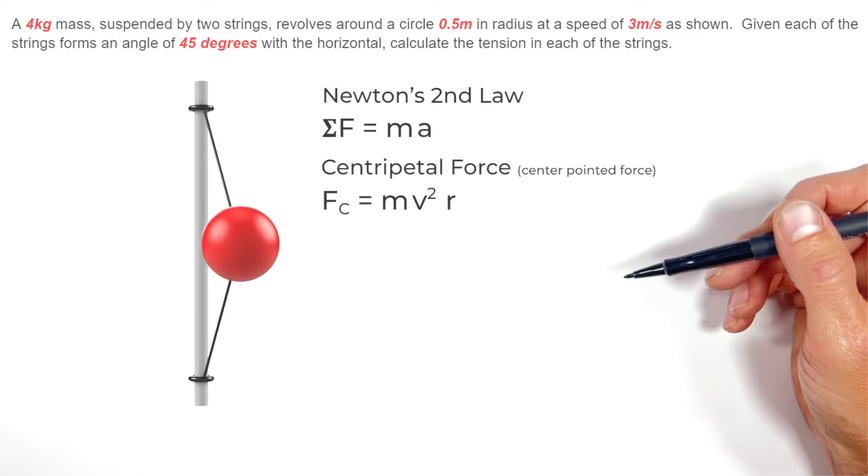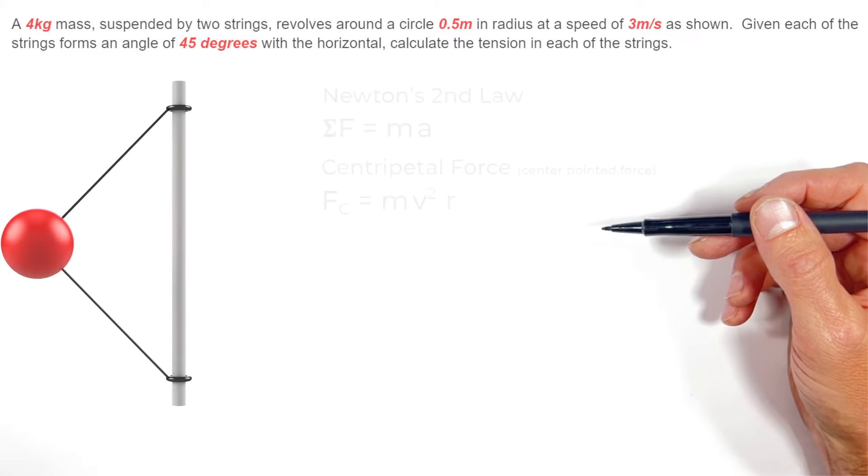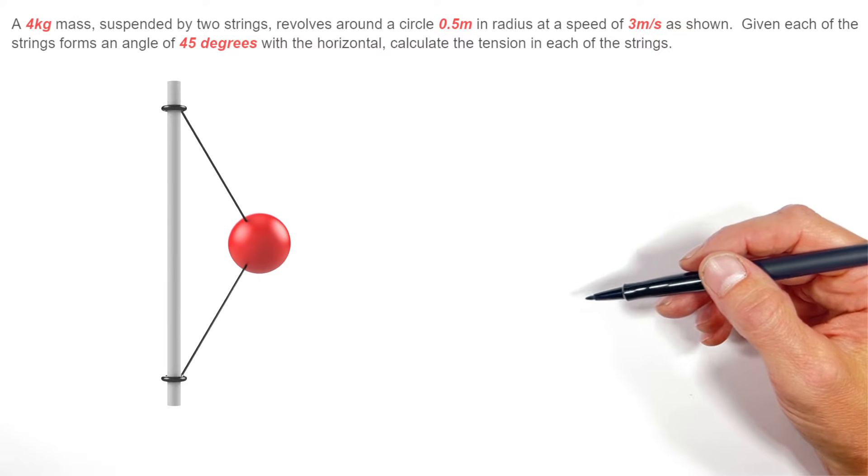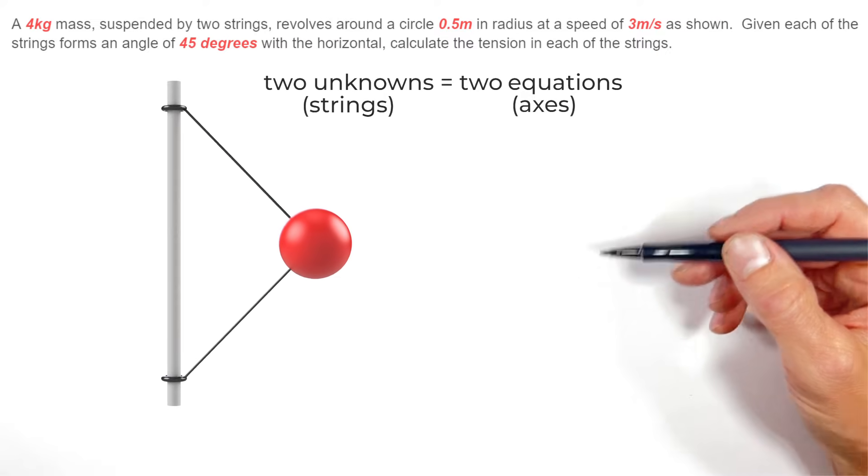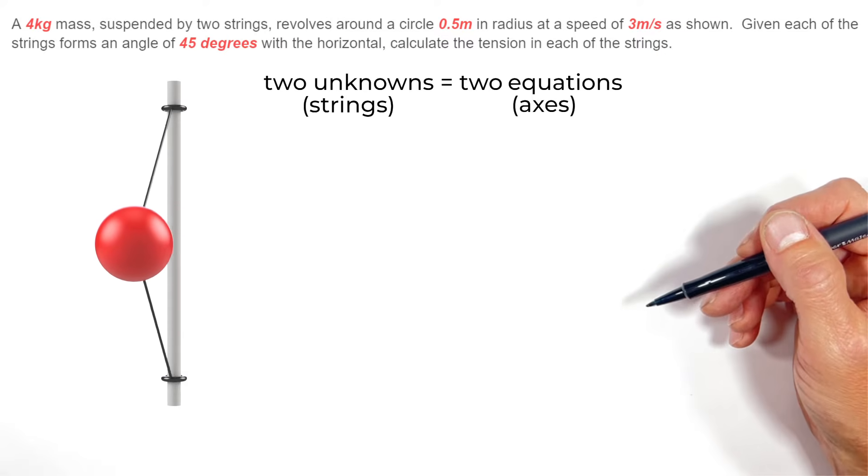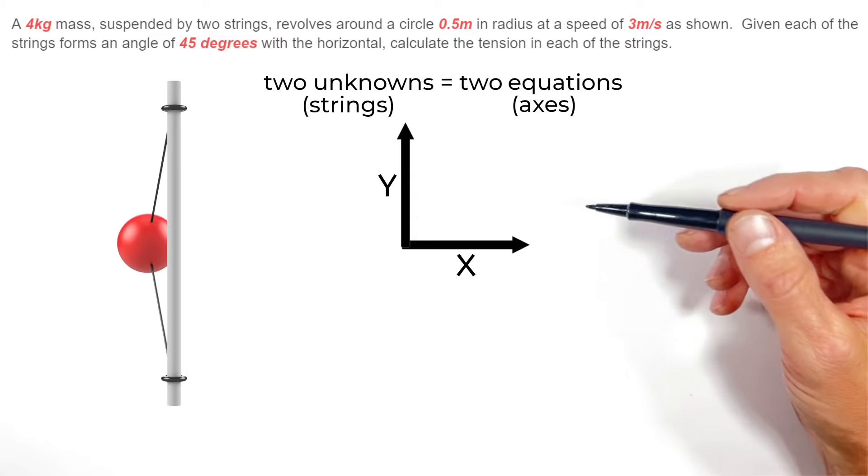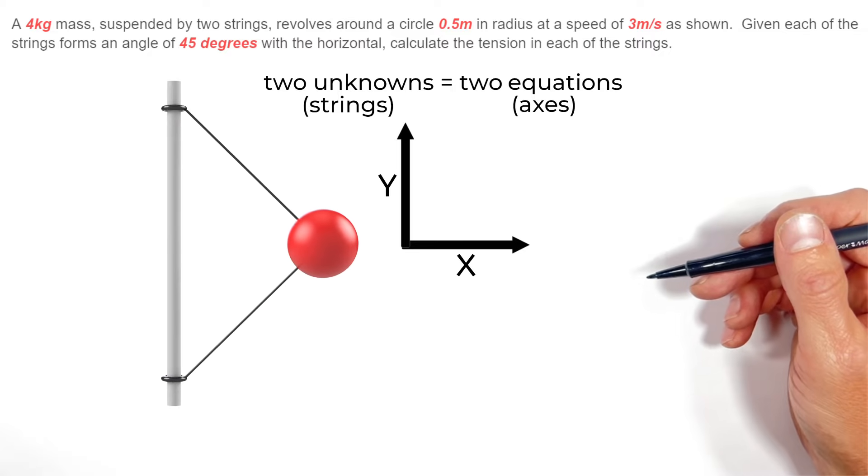You see, to solve this problem what we're going to need to do is look at both the top and the bottom string as variables or unknowns, and since we have two unknowns in this problem we're going to need to look at both the x and the y axis motion of this ball in order to solve for the two tensions in the strings.